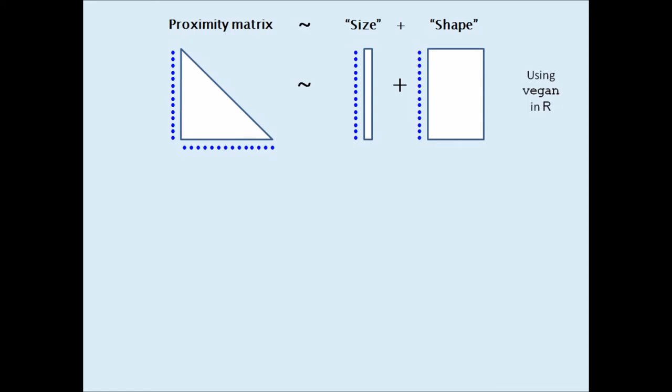These two components can never be completely separated, as there is always a part of the variance in the proximities that confounds them both. But one can isolate the size component after partialing out shape, and likewise the shape component after partialing out size.